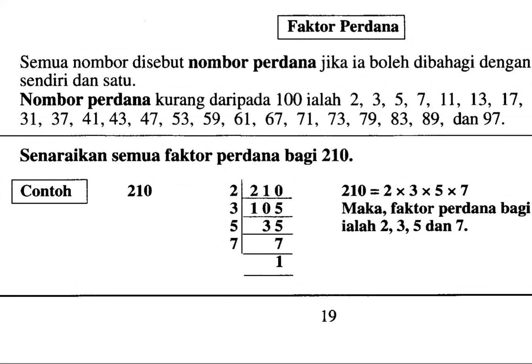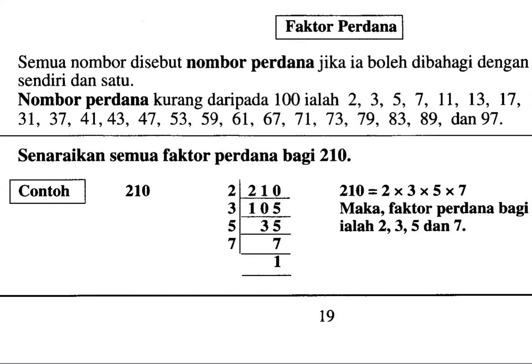37, 41, 43, 47, 53 — 53 pun tak boleh. Kalau kita guna calculator, 59 pun langsung tak boleh bahagi dengan apa-apa nombor. 61, 67, 71, 73, 79, 83 — 83 pun tak boleh, nak bagi 2 pun tak boleh, 3 pun tak boleh. 89, and the last one is 97. So these are nombor perdana.